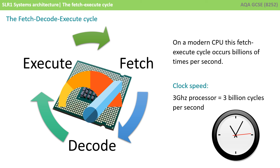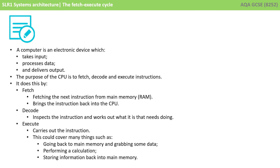We'll be taking a deeper look at how this all actually works and what goes on behind the scenes in the next two videos. So let's just recap what we've learned: a computer is an electronic device which takes input, processes data, and delivers output. The purpose of the CPU is to fetch, decode, and execute instructions. It does this by fetching the instruction from main memory and bringing it back to the CPU, then inspecting the instruction to work out what needs to be done, and then carrying out the instruction, which could involve many different activities.